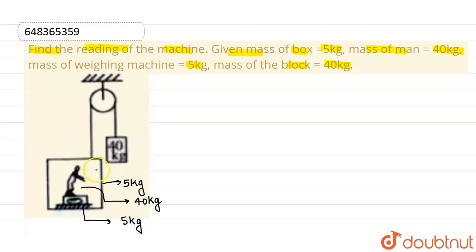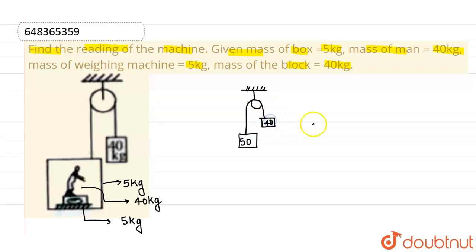The total mass hanging on this particular side is 50 kg. So this pulley system can be considered as one block of 50 kg and another block of 40 kg. The 50 kg side will go down with acceleration a, and the 40 kg side will go up with acceleration a.